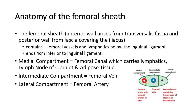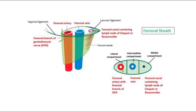The femoral sheath's anterior wall arises from the transversalis fascia, and the posterior wall from the fascia covering the iliacus. The femoral sheath contains femoral vessels and lymphatics below the inguinal ligament, and ends 4 cm inferior to the inguinal ligament. The medial compartment is the femoral canal, which carries lymphatics, the lymph node of Cloquet, and adipose tissue.